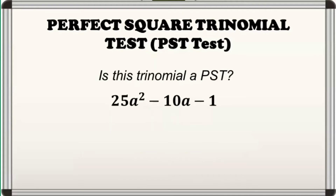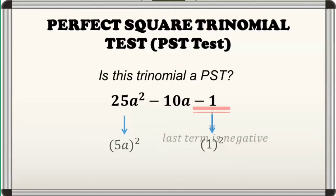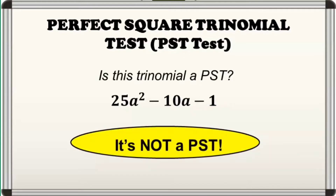Next example, we have 25a squared minus 10a minus 1. Checking the first and last terms, both are perfect squares since 25a squared is equal to the square of 5a and 1 is equal to the square of 1. However, the last term is negative. So, hindi na satisfy ang unang requirement. Therefore, the given is not a PST.